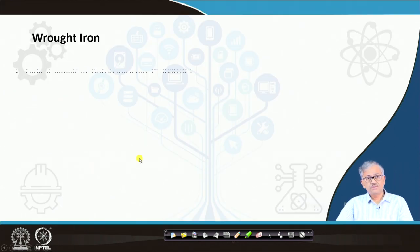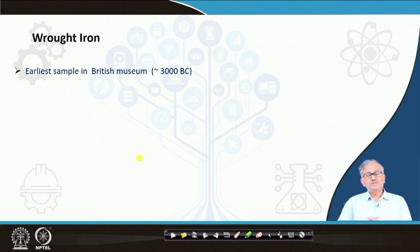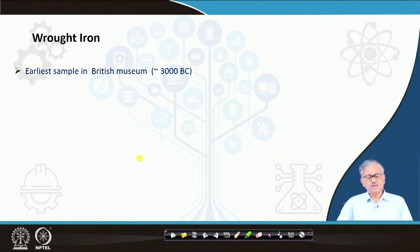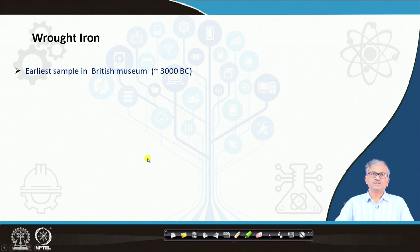Wrought iron: the earliest sample of wrought iron is obtained in the British Museum, dating to around 3000 BC. What is wrought iron? Wrought iron is basically iron produced in the solid state — if you heat an iron ore in the presence of carbon, you can remove the oxygen, similar to what we call DRI today.